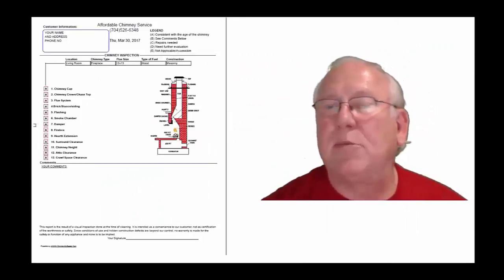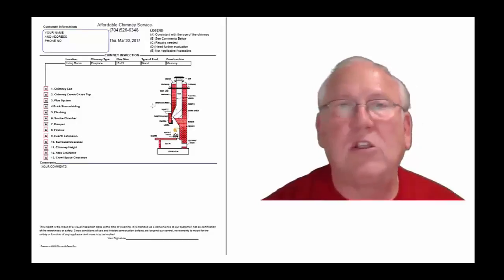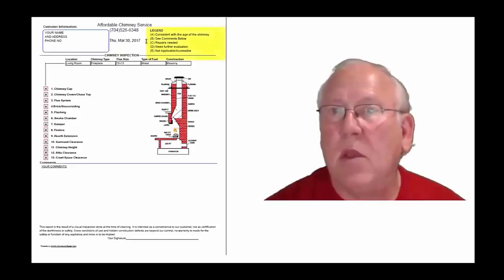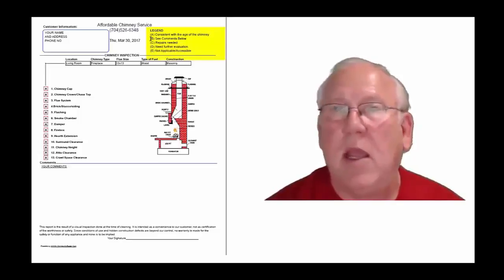Okay, now let's take a look at the inspection report and see how it reads out. This is a generic report, exactly what you will get, only your information will be filled into these blanks. The upper right-hand corner is the legend. Each of these initials pertains to something. A is consistent with the age of the chimney.